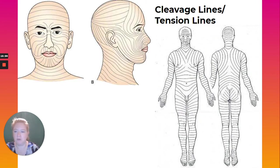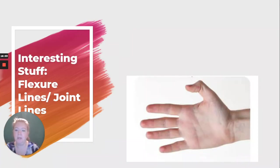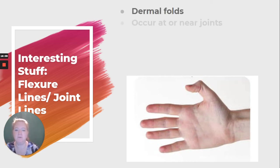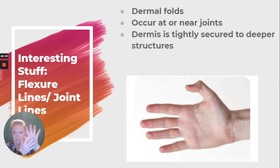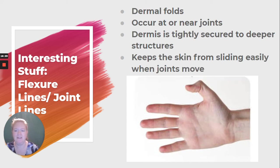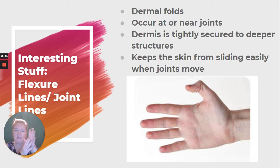Here's an illustration of where those collagen and elastin fibers orient around our body in cleavage lines. We also have flexure lines or joint lines, which are actually folds in our dermis that occur at or close to our joints — we have a lot of them on our palms. It's where the dermis is tightly secured to deeper structures, keeping the skin from sliding easily when joints move.